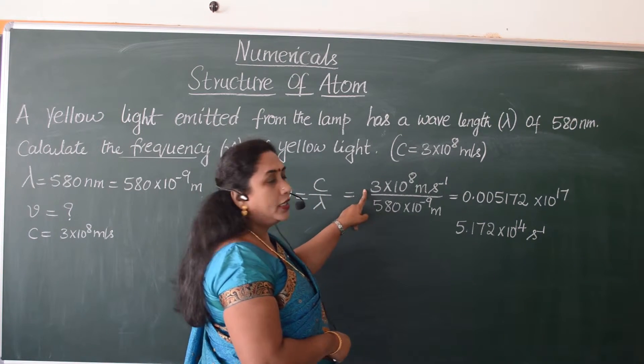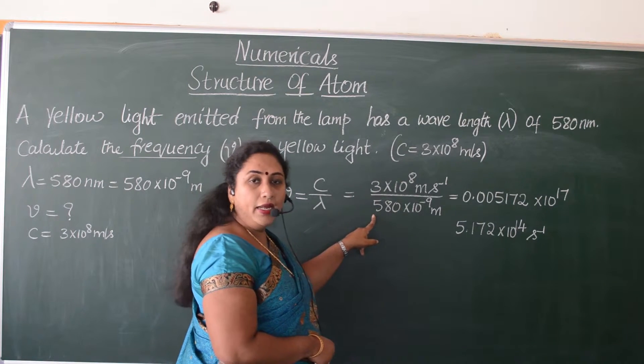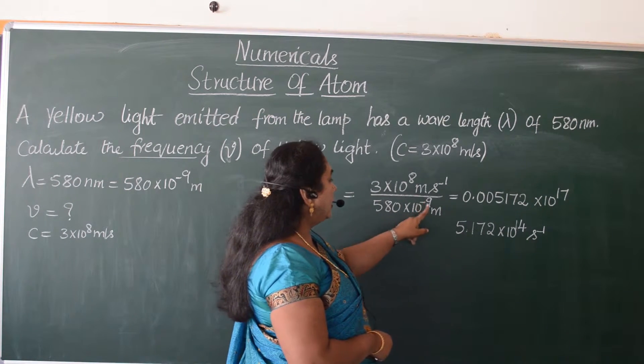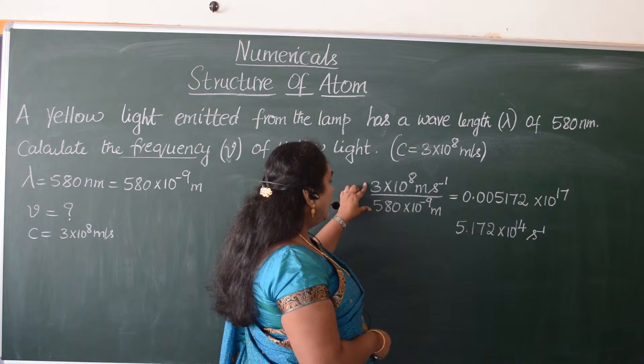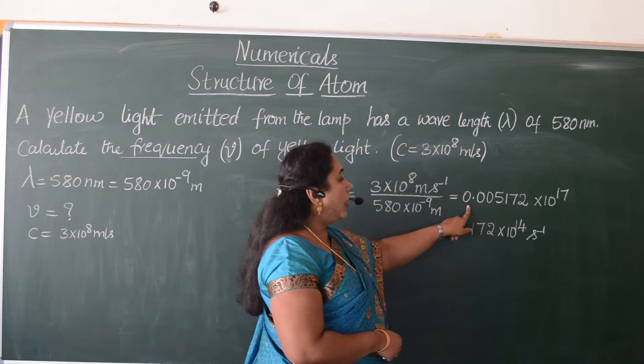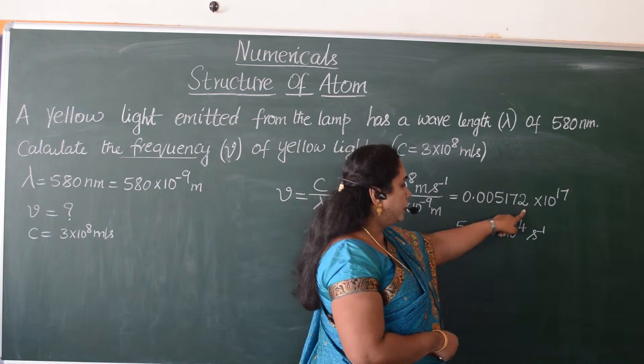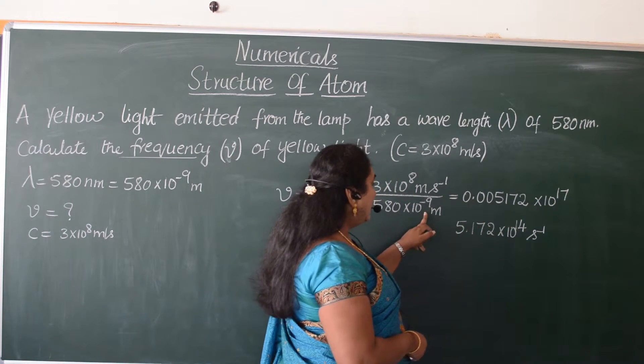C is 3 × 10^8 meters per second divided by 580 × 10^-9 meters. When we divide 3 by 580, we get the value as 0.005172 into 10^17.